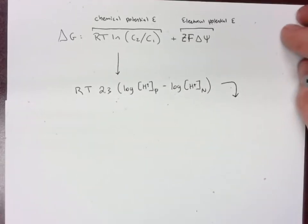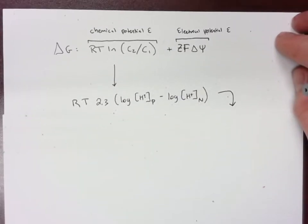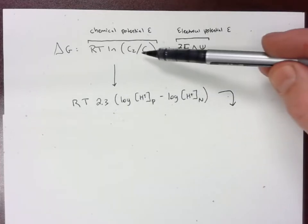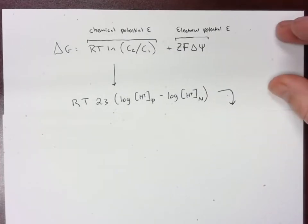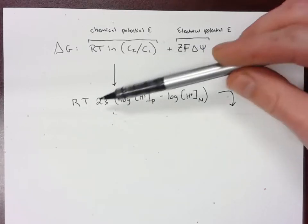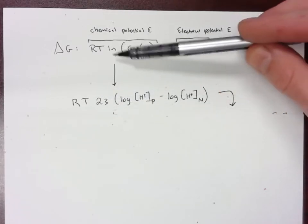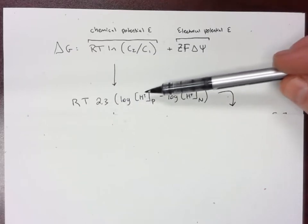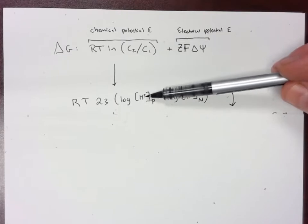The way we do that is take the RT and we transform this from a natural log into a log base 10. So we pull out 2.3 and then end up with log of H⁺ on the positive side. This is going to be on the inner membrane space side.